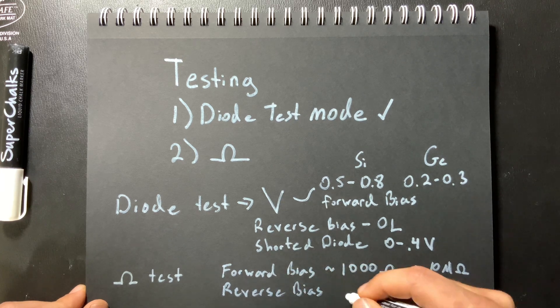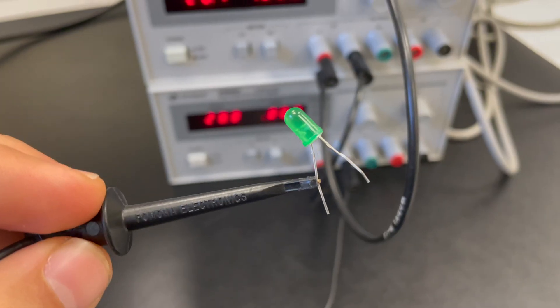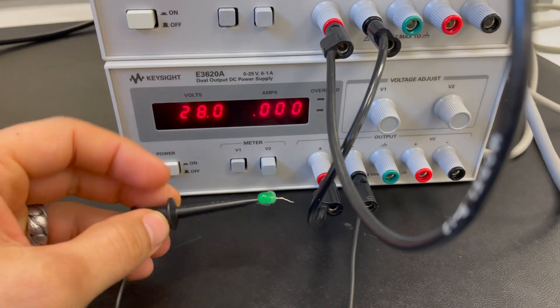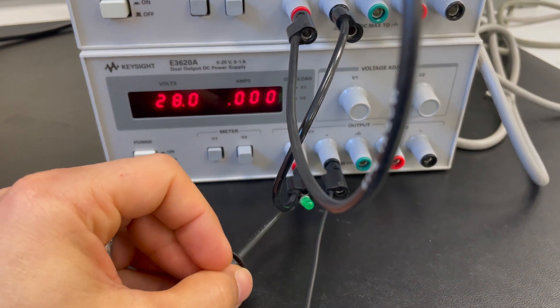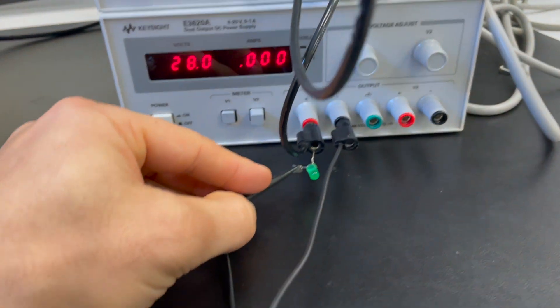Now we want to destroy a diode so that we can test it. All right so I have this LED and I have it connected in reverse bias. So I'm going to go ahead and attach this to the first power supply.